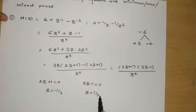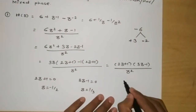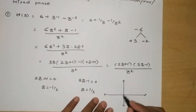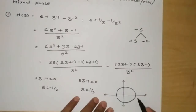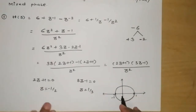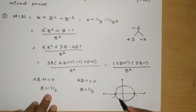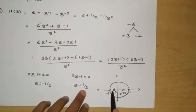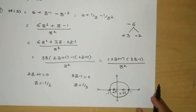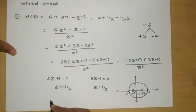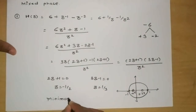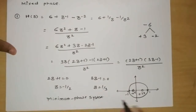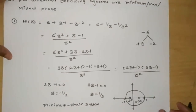Setting 2z + 1 = 0 gives z = −1/2, and setting 3z − 1 = 0 gives z = +1/3. Both zeros are at −0.5 and +0.33. Plotting on the unit circle, both points lie inside the unit circle. Therefore, this is a minimum phase system, since all zeros lie inside the unit circle.